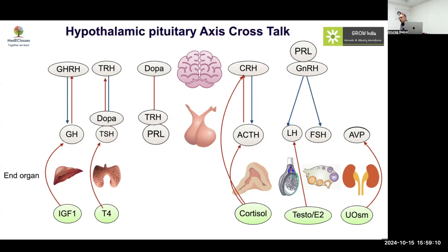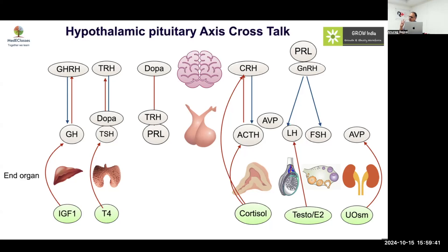TRH and dopamine cross-connect with TSH and prolactin. Prolactin inhibits GnRH, reducing LH and FSH levels. If prolactin is high, LH will be low, meaning in girls there will be less theca cell activity, less testosterone, and less pubic hair. This explains Van Wyk–Grumbach syndrome in primary hypothyroidism: delayed puberty, large ovarian cysts, menstrual periods, good breast development, but no pubic hair — because prolactin is high and LH is low.